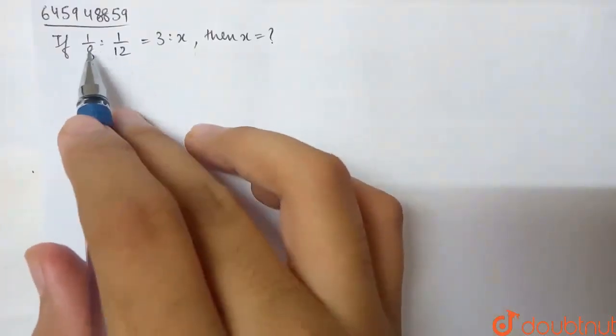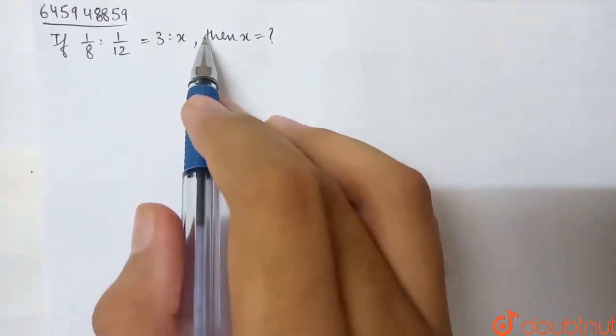This question says: if 1/8 is to 1/12 is 3 is to x, then find the value of x.